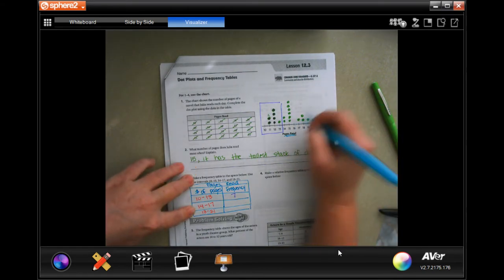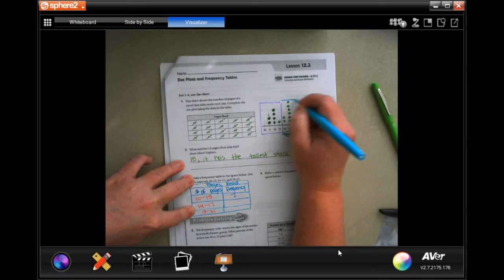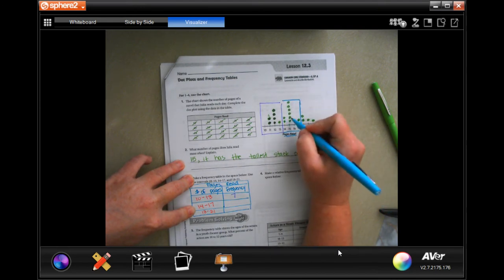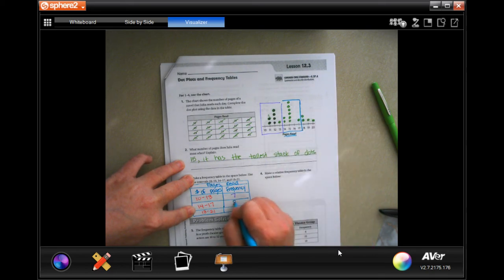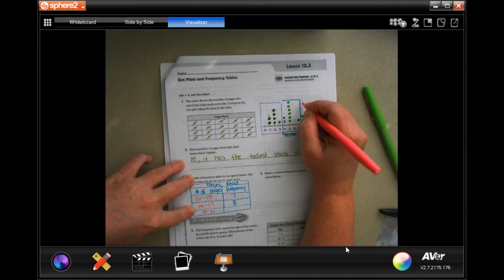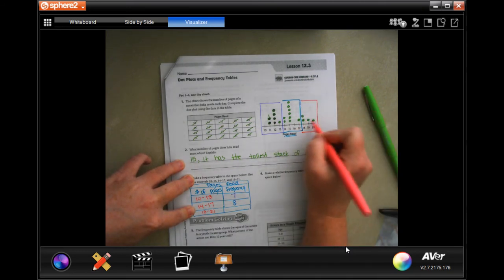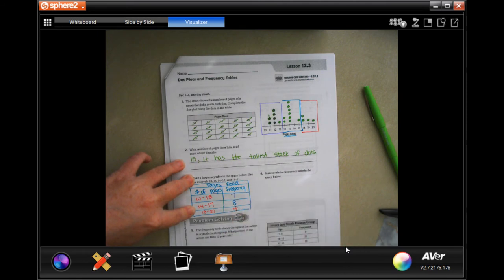For 14 to 17, there's one, two, three, four, five, six, seven, eight. And for 18 to 20, there are one, two, three, four. Done. That's all you had to do for that one.